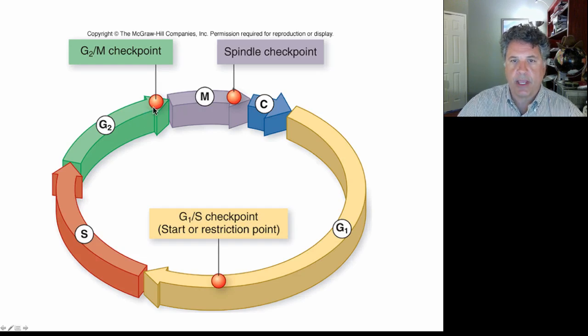And at the spindle checkpoint, it's kind of the anaphase checkpoint, it's asking have all my chromatids been attached to microtubules in preparation for segregation of chromatids to opposite poles of the cell, which will enable cytokinesis to partition the genetic material into equal parts to two daughter cells. So the spindle checkpoint asks whether we're ready to separate the chromatids.